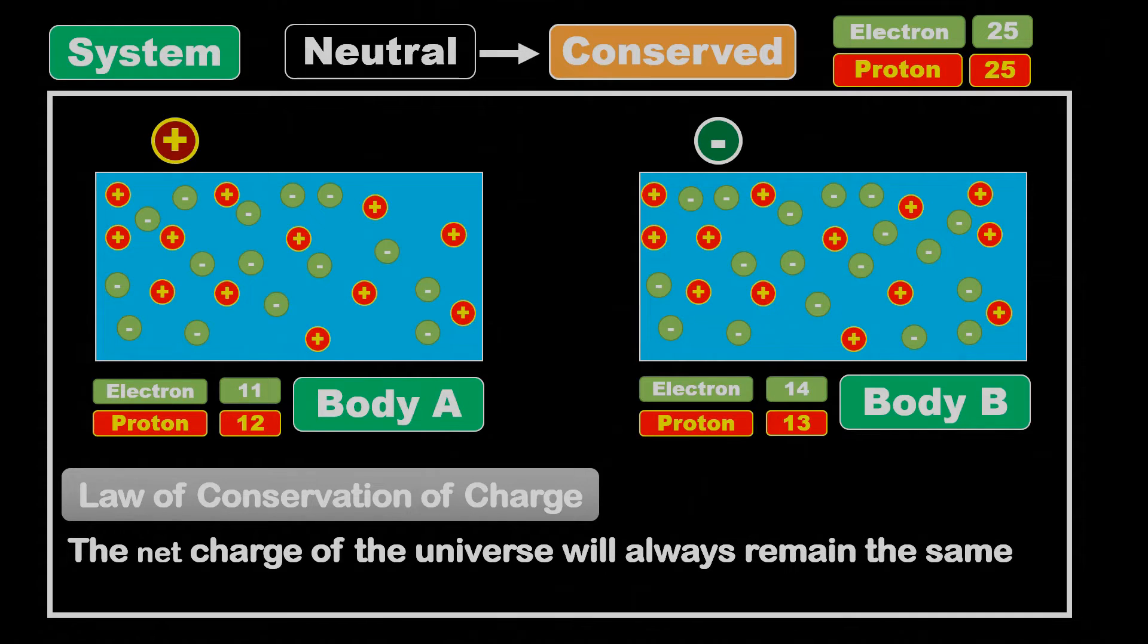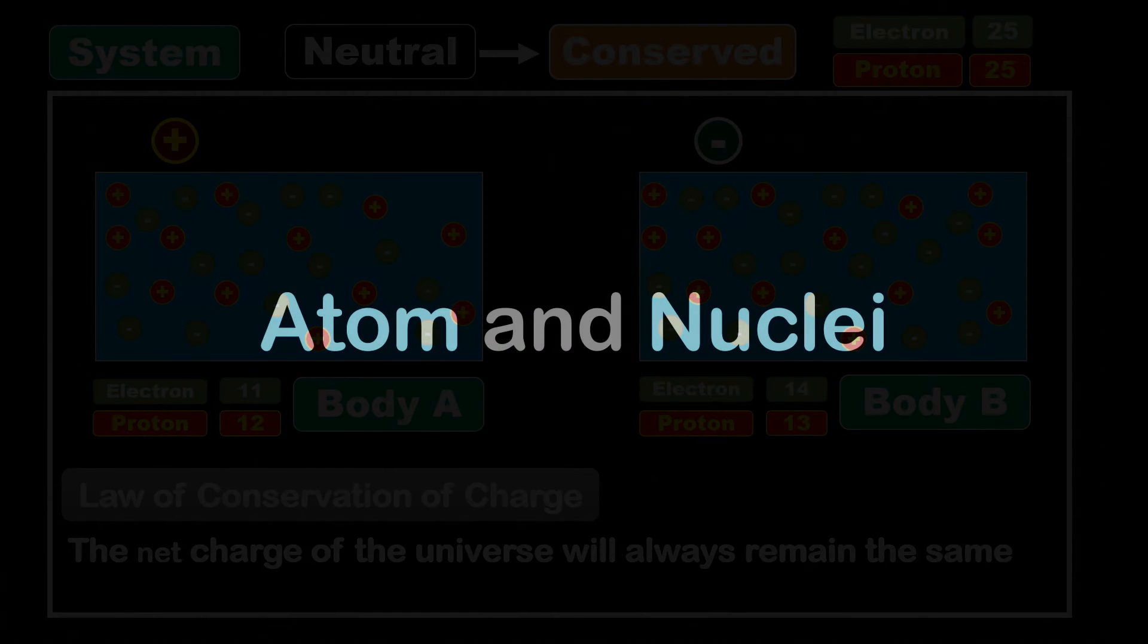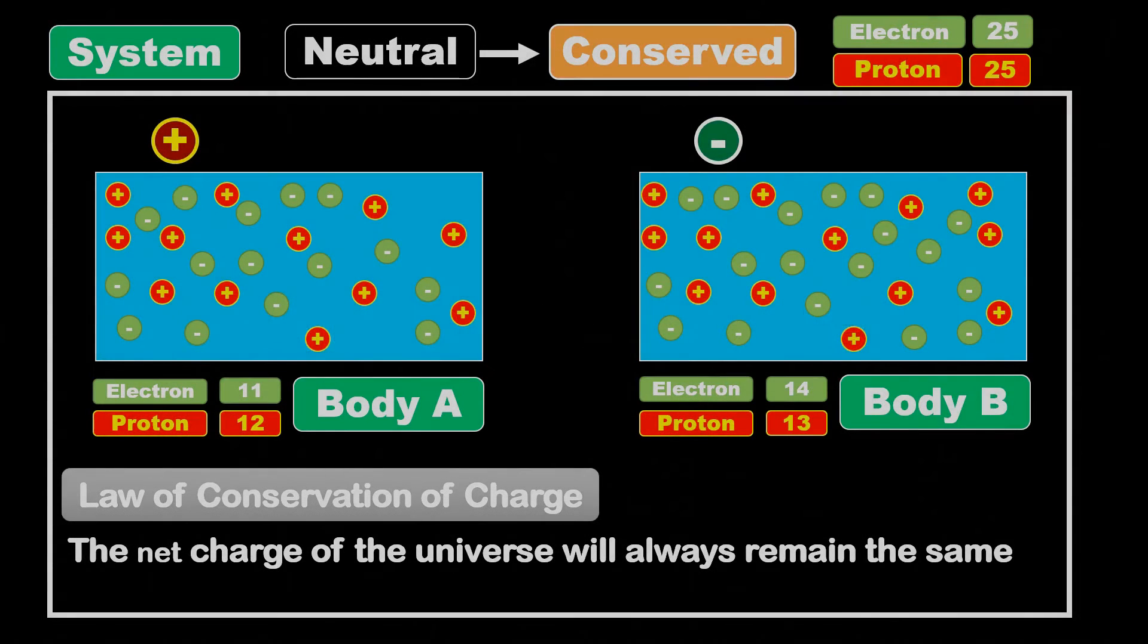This is because nature always produces charged particles in pairs and destroys them in pairs. We will talk about energy mass relation and charged particle creation in the unit atom and nuclei, later in this 12th physics animation series.